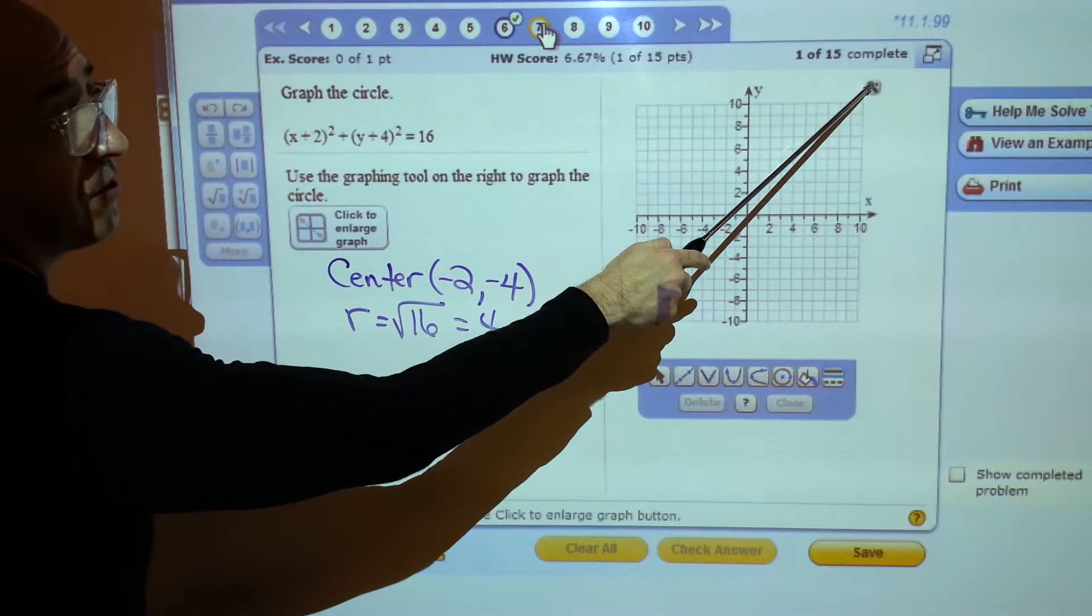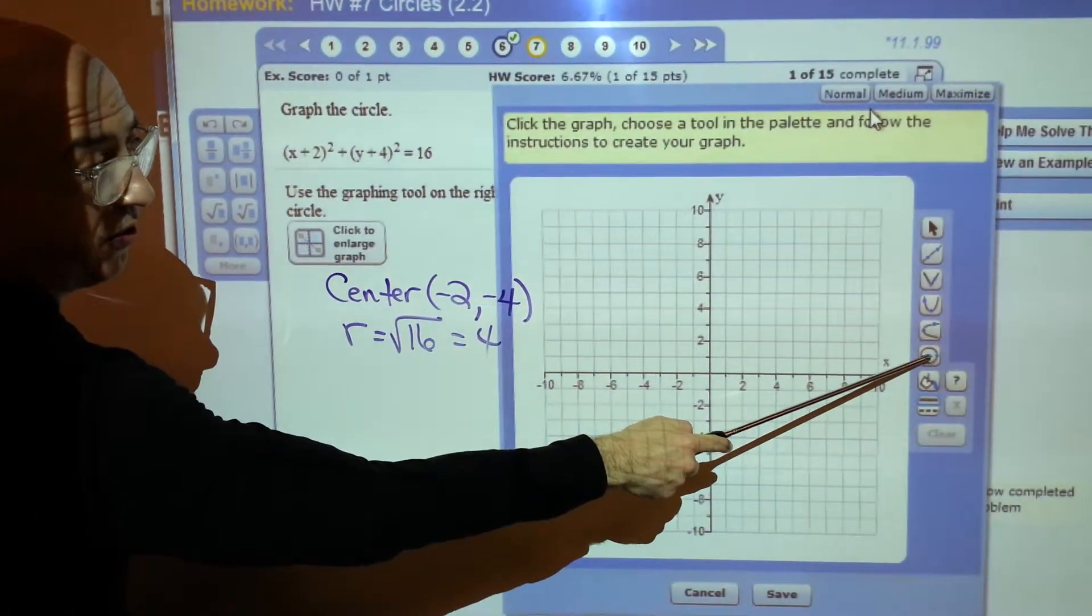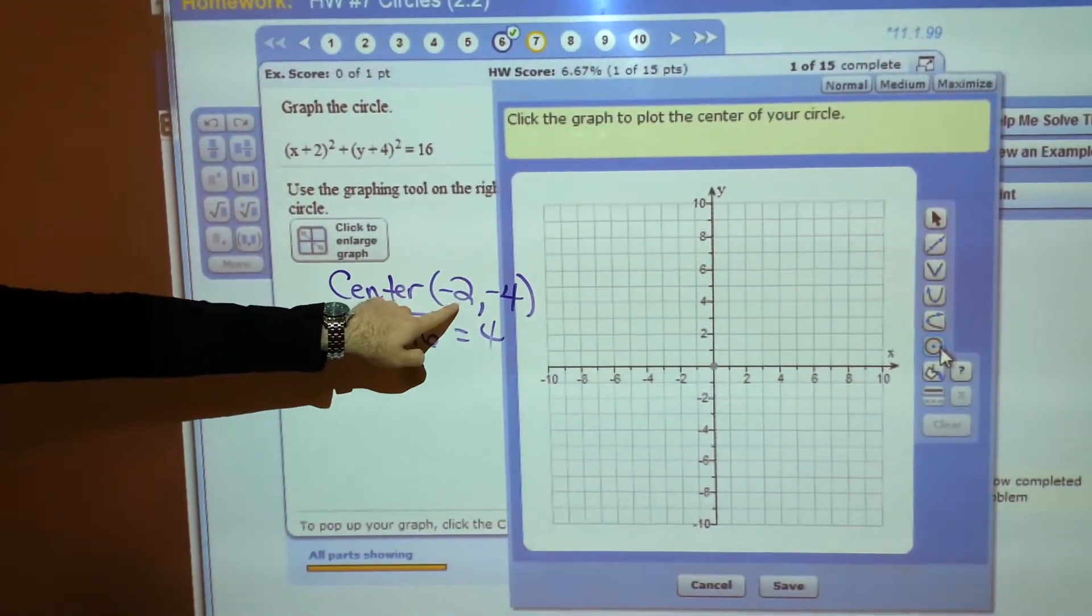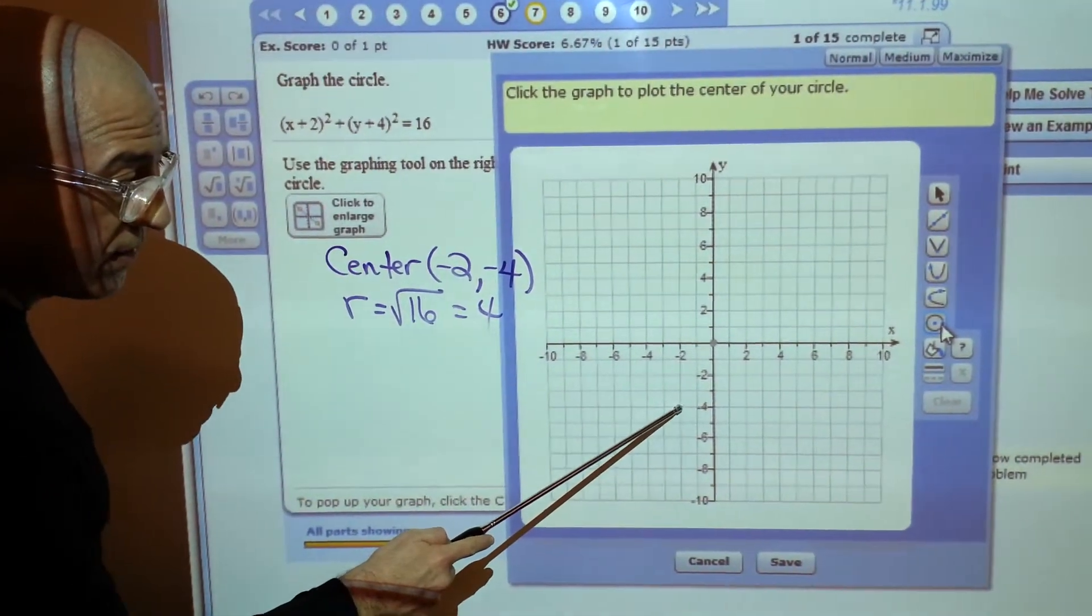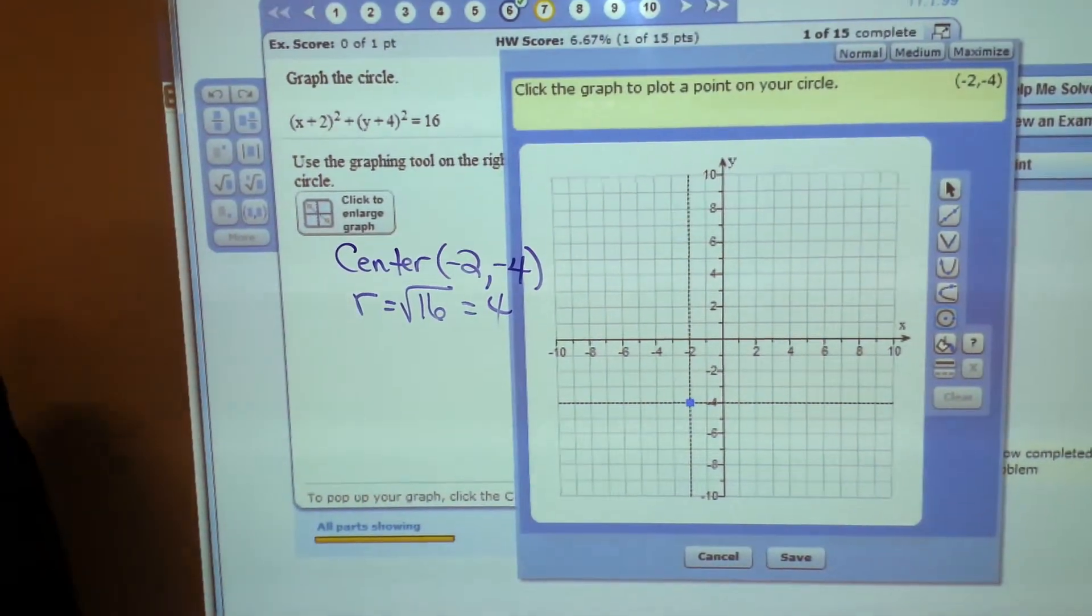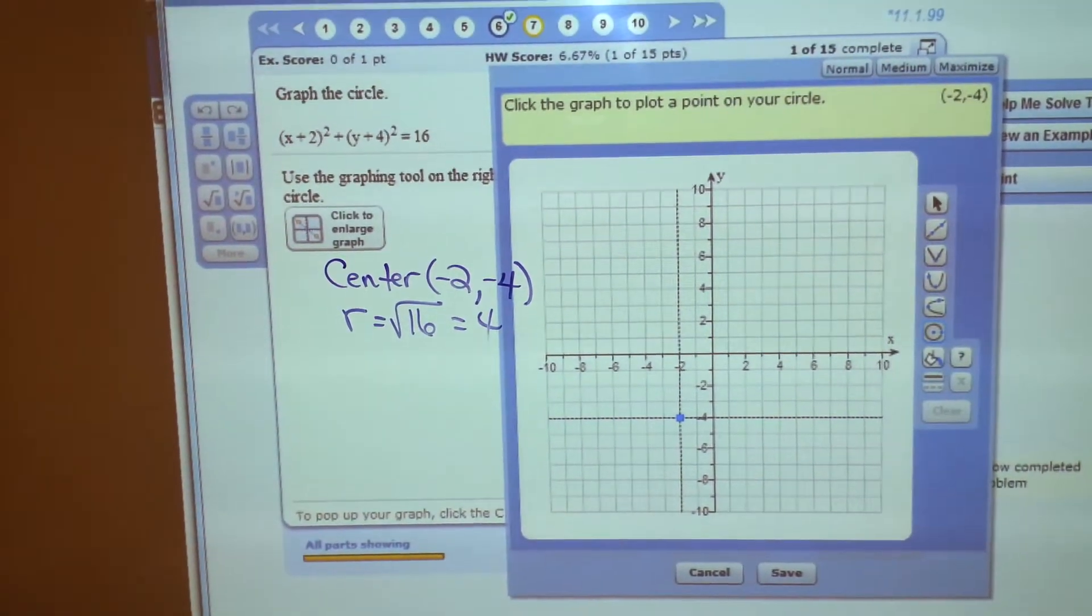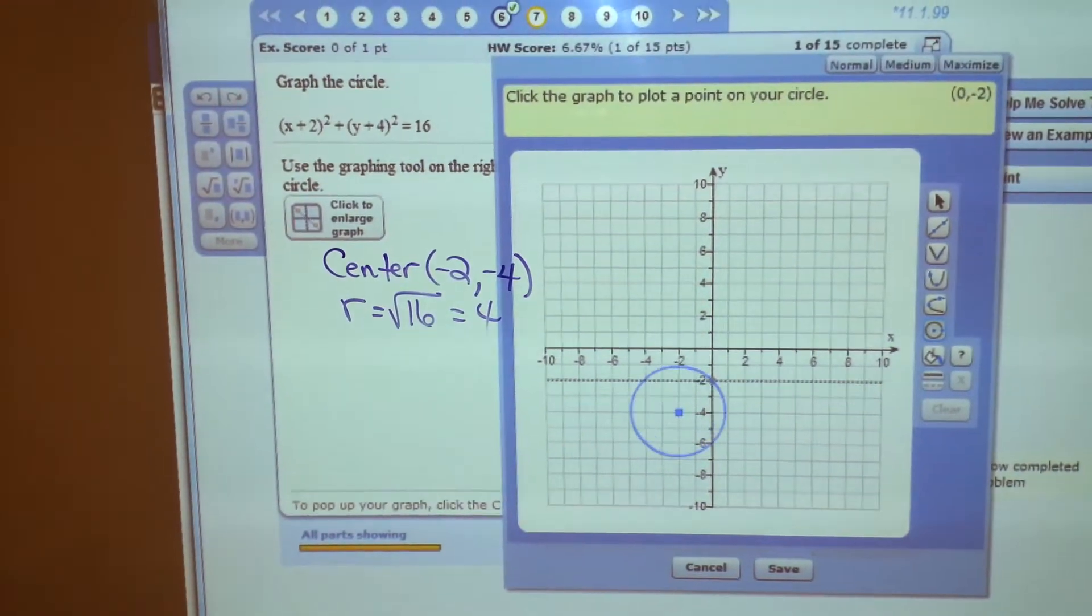To graph it, blow it up. This is a circle. So, you start off plotting the center. Left 2, down 4. I'm not sure if this works. Oh, okay, it did that. And now, I need to move over the radius. The radius is 4.